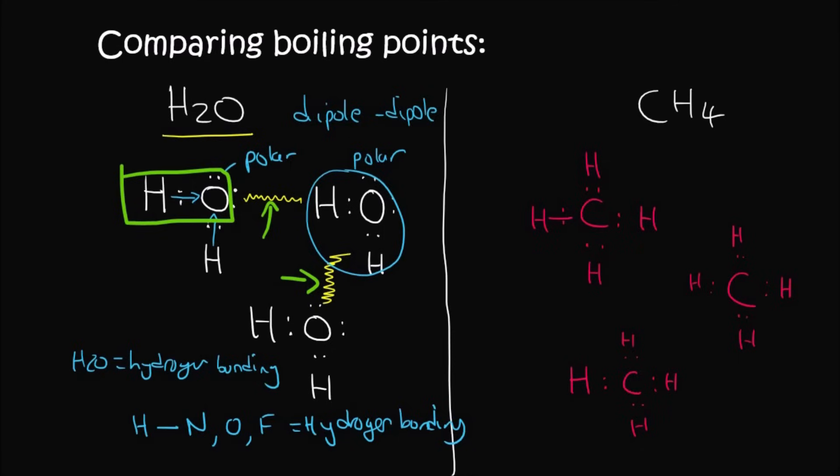Now we need to move over to the right-hand side and look at methane. Now we know from our electronegativities that the arrow is going to go towards carbon, but can you see that those arrows would all cancel out? Because it looks like this, like this, like this, and like that. And when those arrows cancel out, then the molecule is balanced, and that's non-polar.